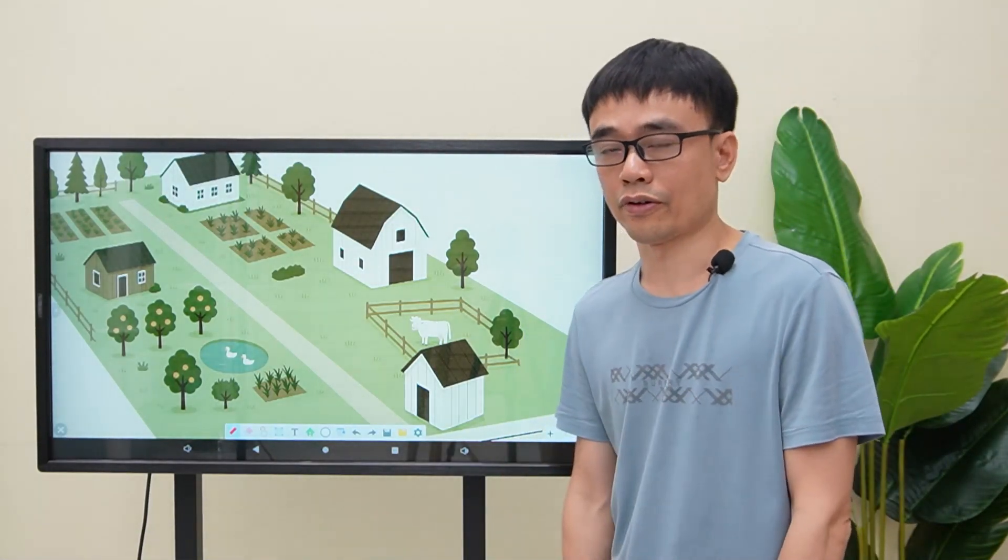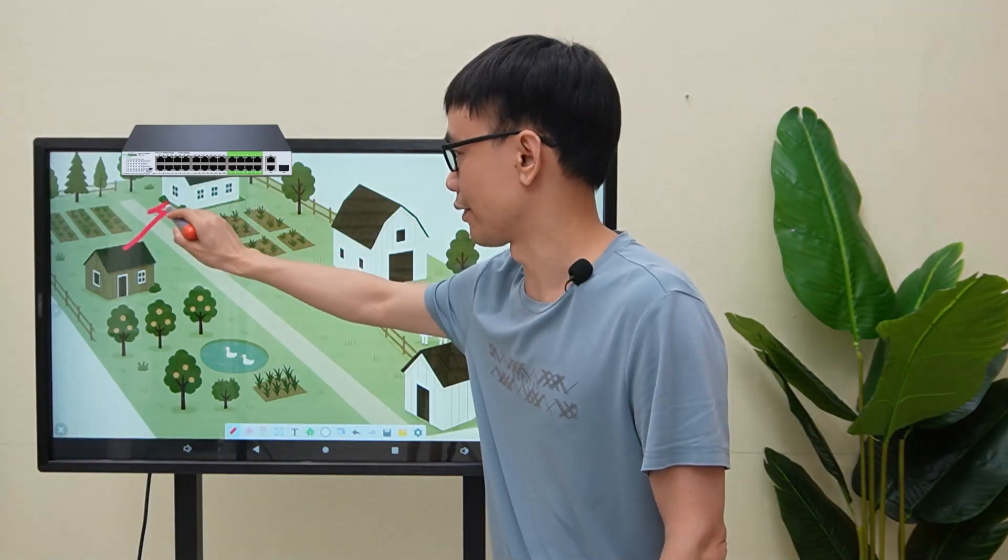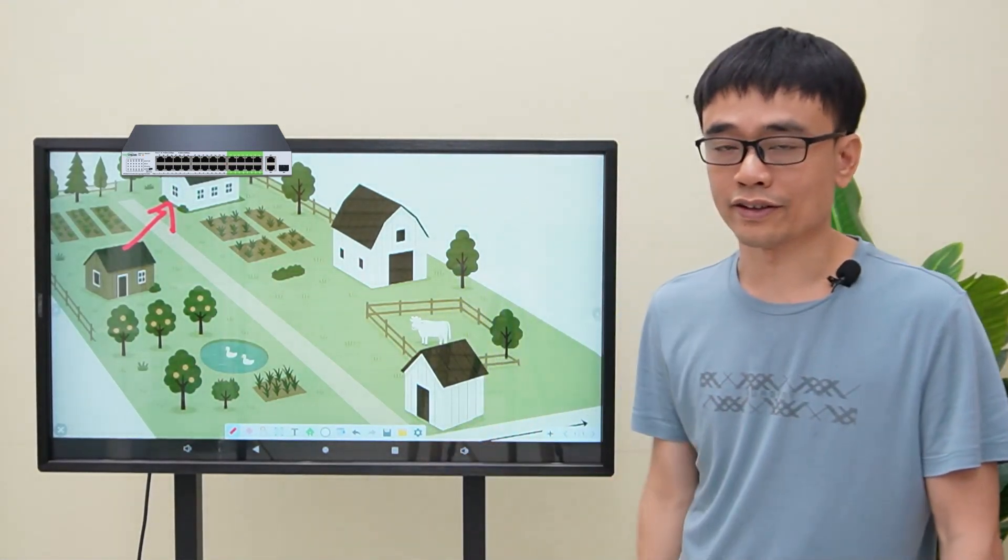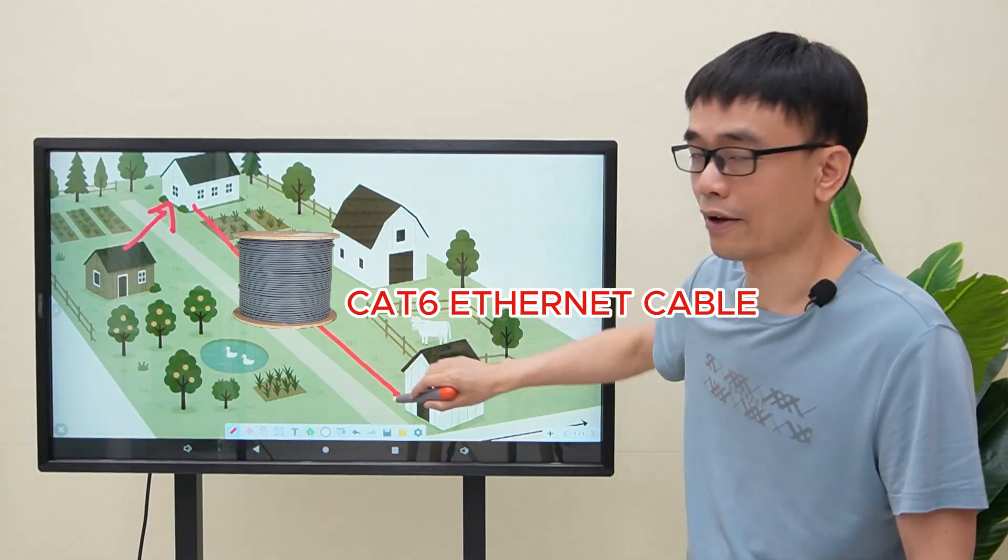This is his setup scenario. He placed the 24-port long-range POE switch in his house, where it has the internet access, and put a CAT6 Ethernet cable from his house to the barn.